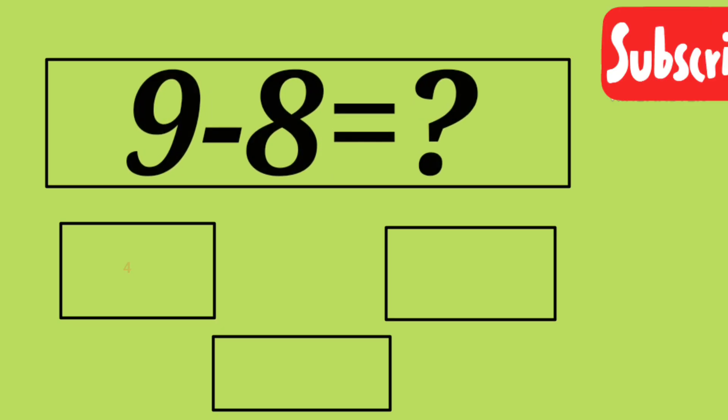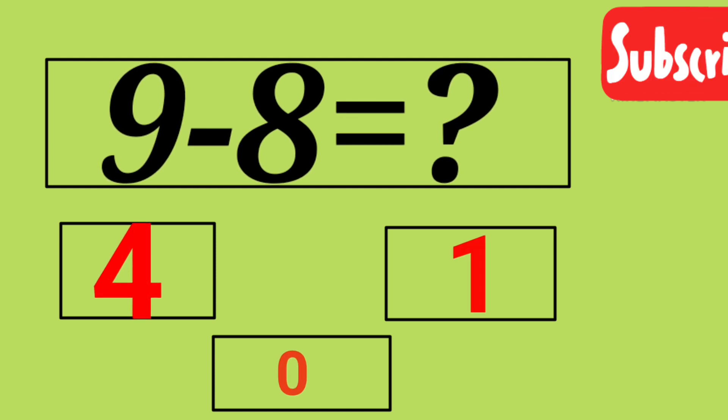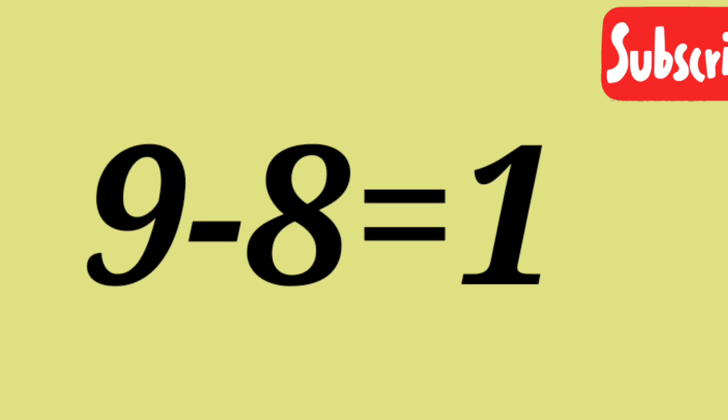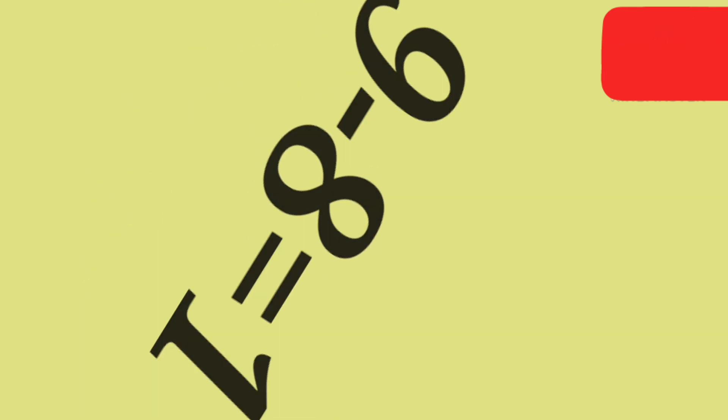9 minus 8 is 4, 1, 0! 1! 9 minus 8 is 1!